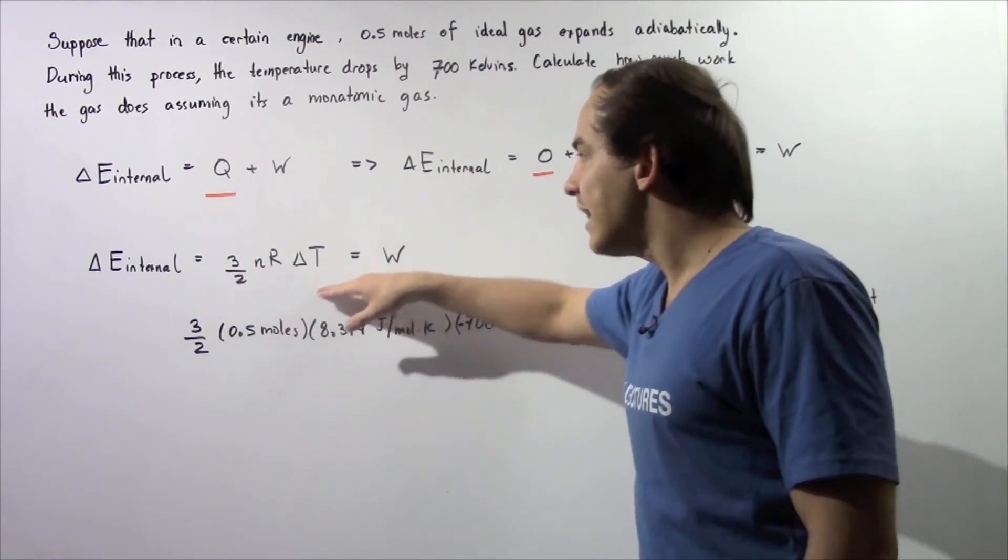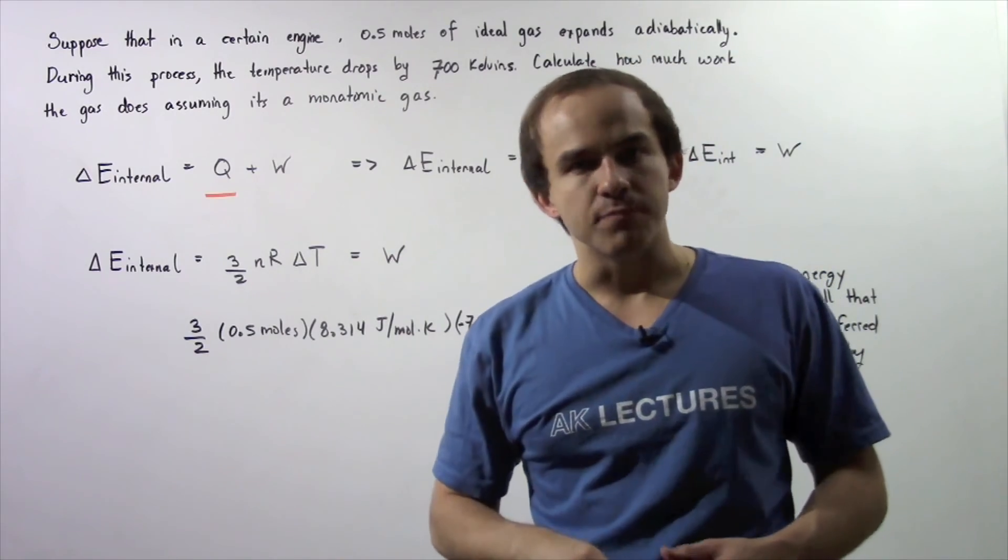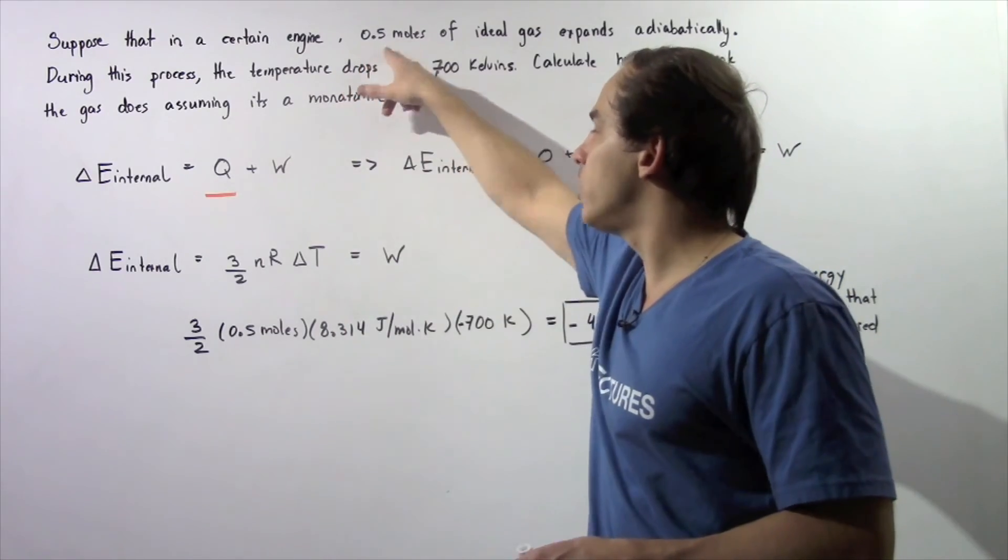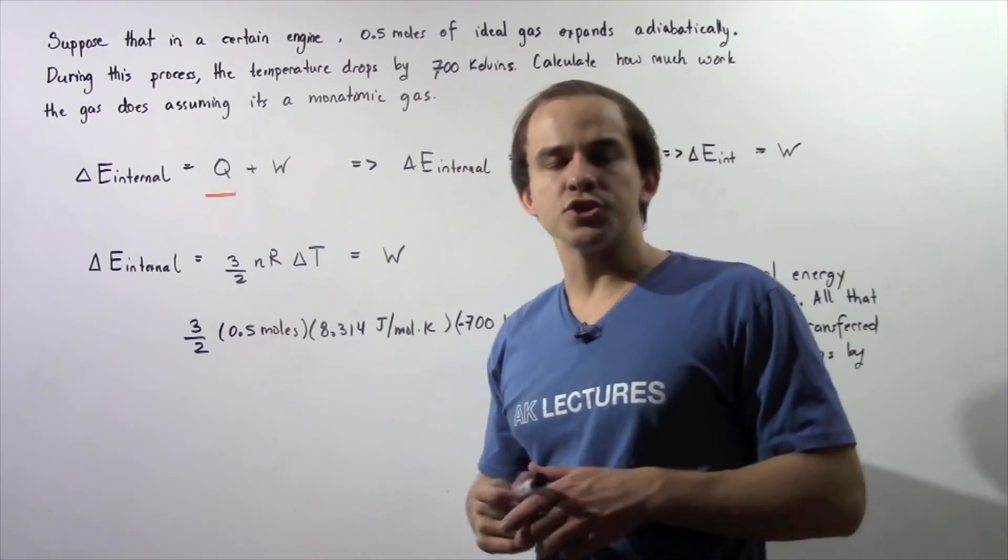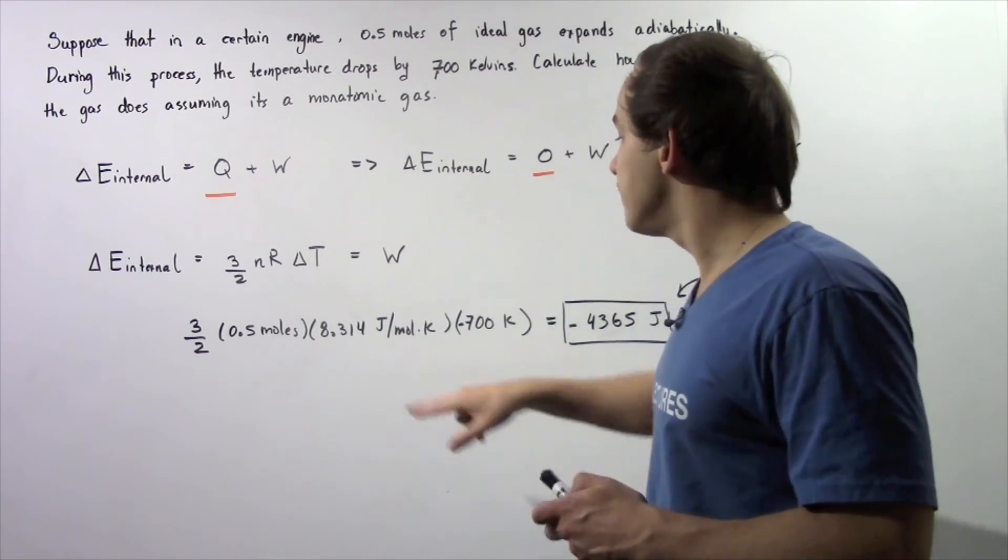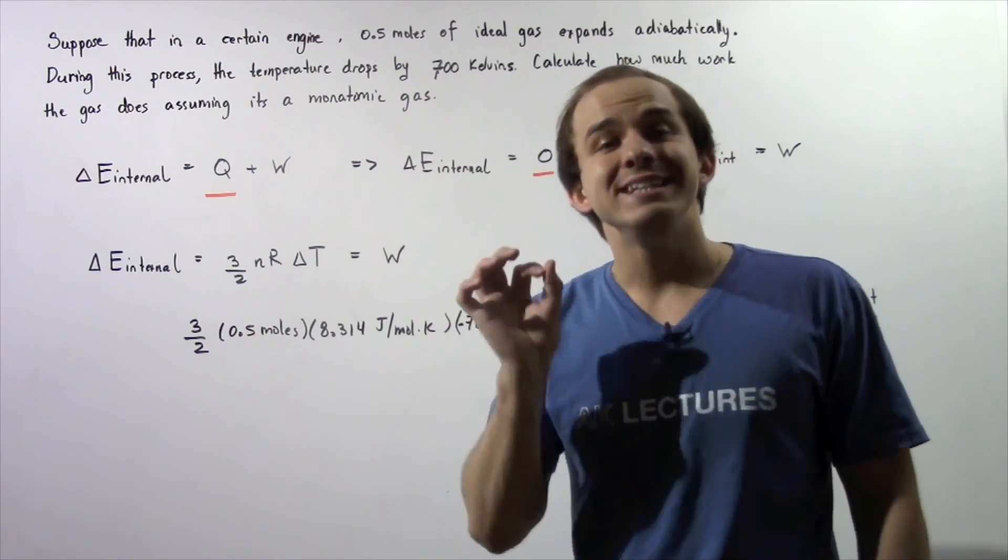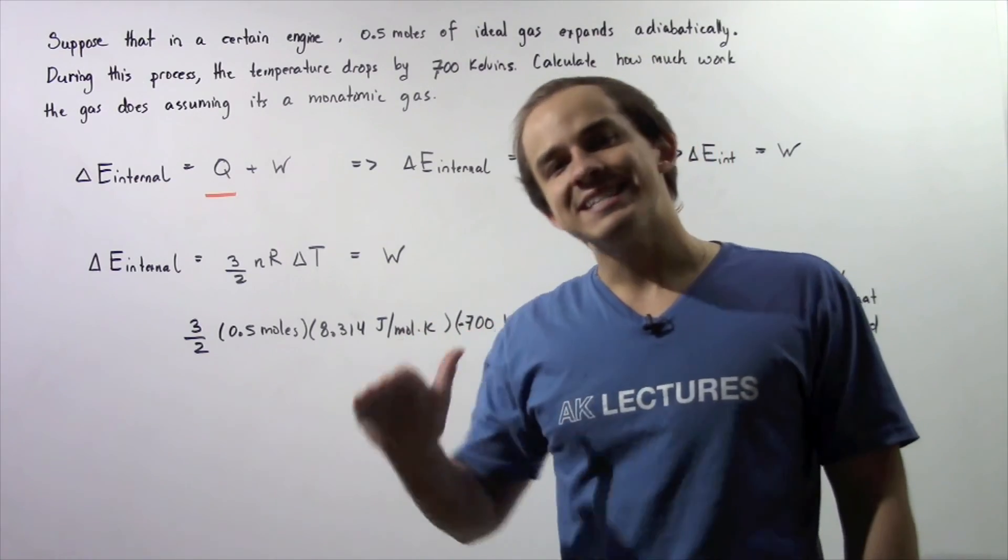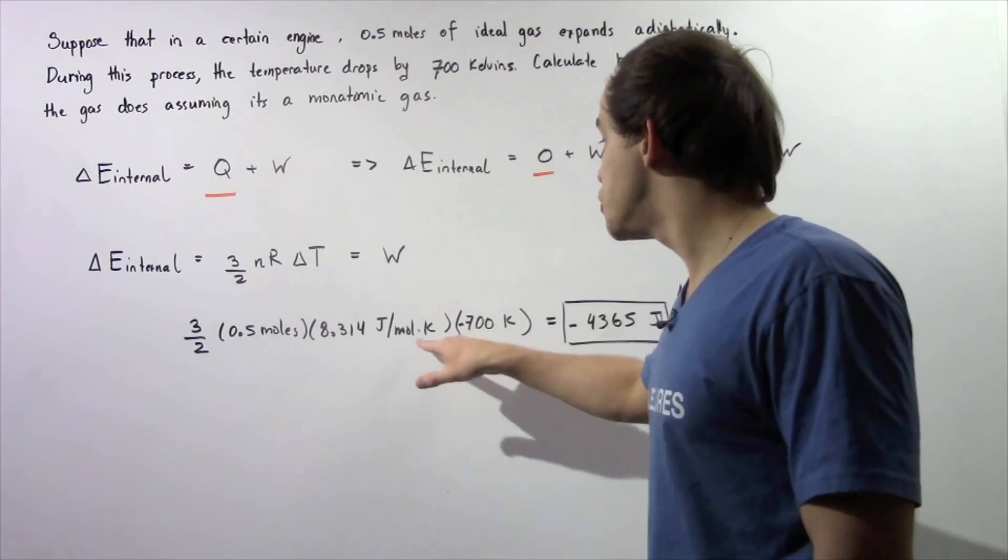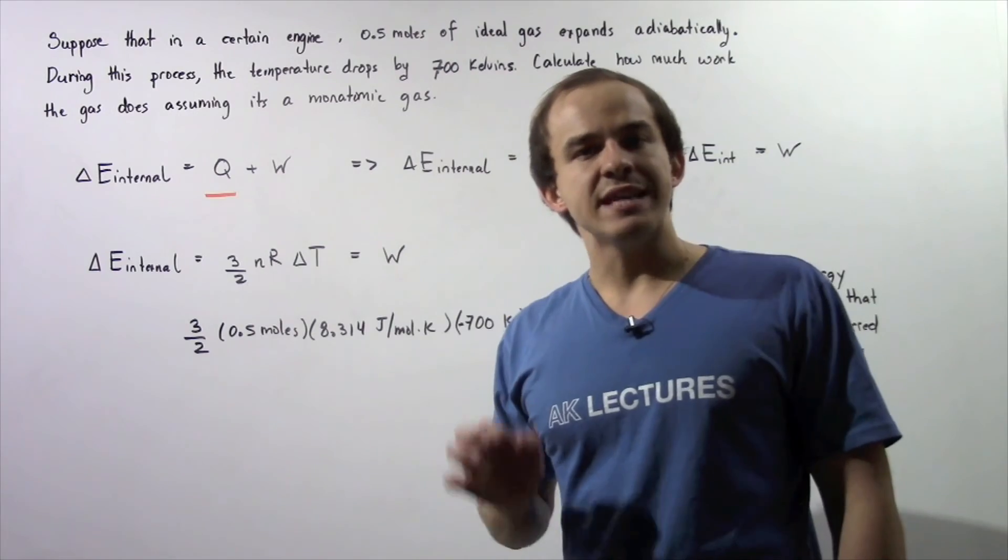Let's actually calculate what the change in internal energy is using this equation. We have 3 divided by 2 multiplied by the number of moles, 0.5 moles, multiplied by R, the universal gas constant, 8.314 joules per mole times Kelvin. Our change in T is 700 and it's negative because we decrease in temperature. So, our final temperature is lower than the initial temperature, and the change in temperature is negative. If we multiply these quantities out, we obtain negative 4,365 joules of energy.